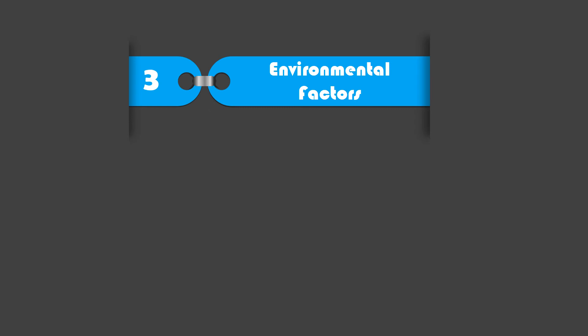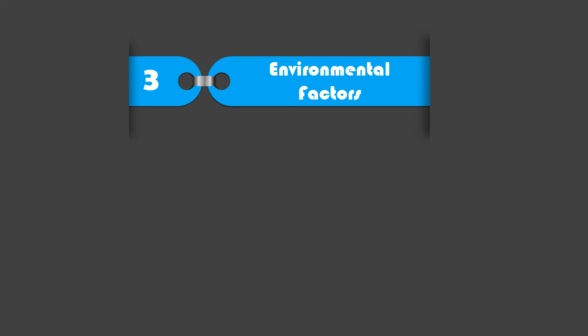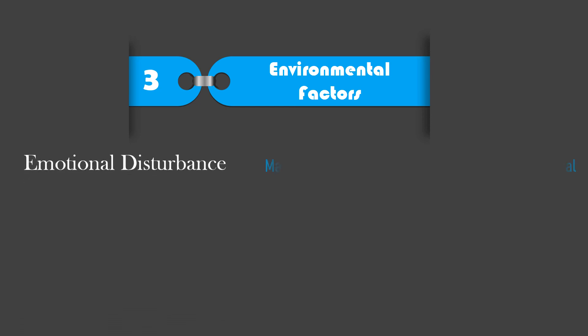Number three is Environmental Factors. Environmental factors are difficult to study. There is evidence that poverty, malnutrition, and inadequate learning experiences — including poor teaching and lack of instructional materials — are causes of environmental disadvantage that make children prone to learning problems. The first type is Emotional Disturbance: many children with learning problems have behavioral disorders as well, and whether one causes the other or whether both are caused by some other factor remains uncertain.